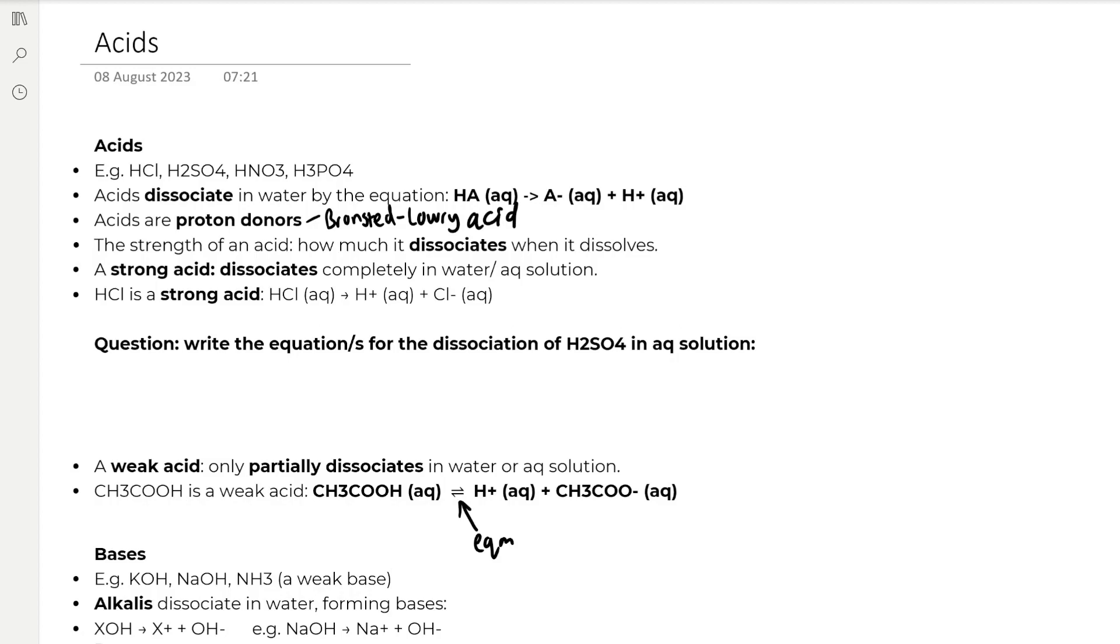Some examples of acid include HCl or hydrochloric acid, H2SO4 sulfuric acid, nitric acid and phosphoric acid. Acids dissociate in water by the equation HA aqueous forms A- which is the conjugate base and H+, and acids are proton donors, that's the Bronsted-Lowry definition of an acid.